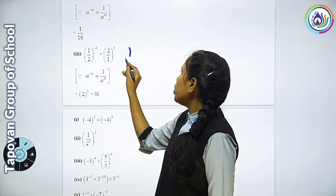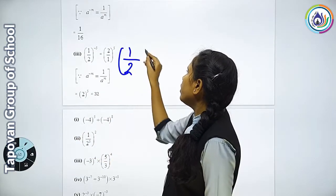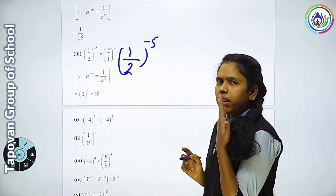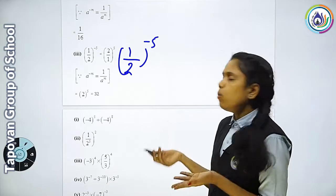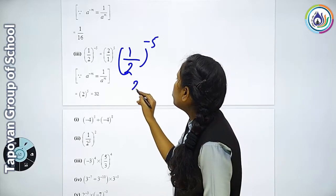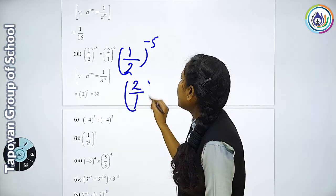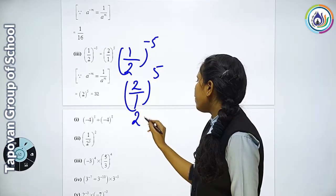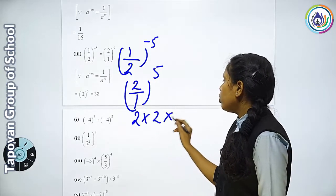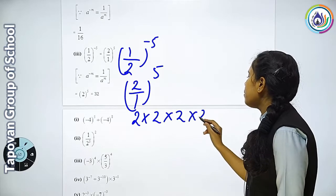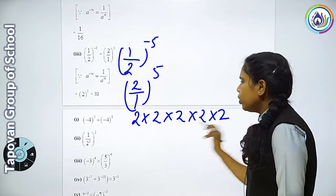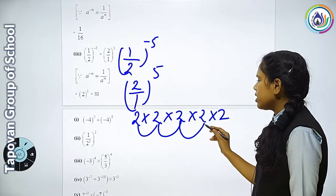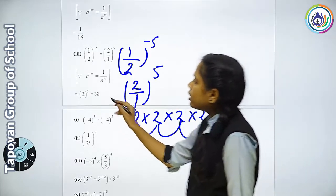Ab yahan 1 upon 2 hai aur uski jo power hai woh minus mein hai — minus 5. To hame kya karna hai? Upar ka number niche lana hai, niche ka number upar le jana hai — reciprocal karna hai. To 2 upon 1 ho gaya. Iski power kitni hai? 5. To 2 ko multiply kijiye 5 time: 2 twos a 4, 4 twos a 8, 8 twos a 16, 16 twos a 32.